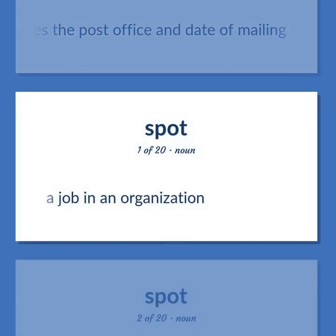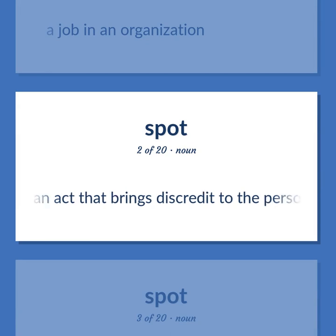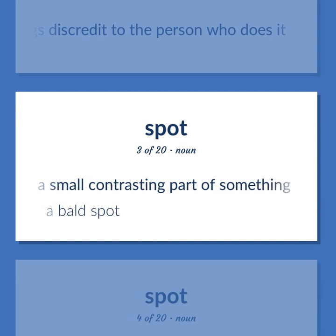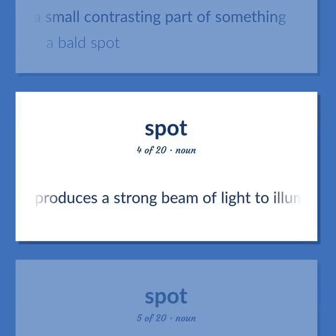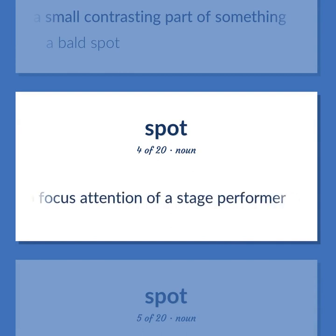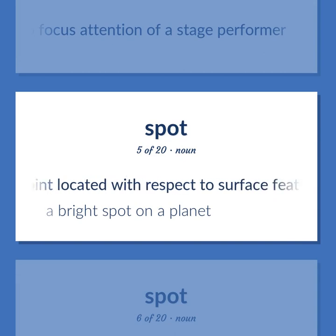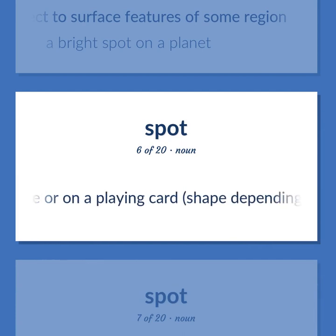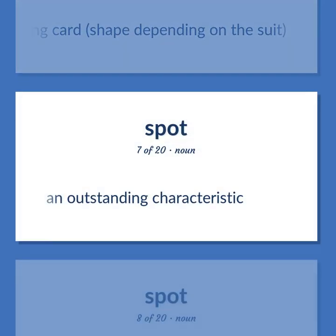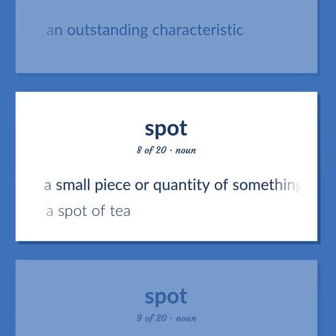Spot: a job in an organization. An act that brings discredit to the person who does it. A small contrasting part of something — a bald spot. A lamp that produces a strong beam of light to illuminate a restricted area, used to focus attention of a stage performer — spotlight. A point located with respect to surface features of some region. A bright spot on a planet. A mark on a die or on a playing card. An outstanding characteristic. A small piece or quantity of something — a spot of tea.